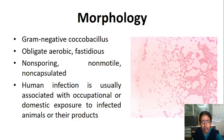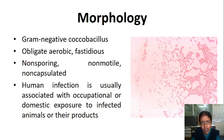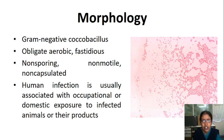Coming to morphology: Brucella are gram-negative coccobacilli, obligate aerobes that survive only in the presence of oxygen, but can sometimes tolerate 5 to 10% carbon dioxide. They are fastidious organisms — non-sporing, non-motile, and non-capsulated. Human infection is usually associated with occupational or domestic exposure to infected animals or their products, mostly sheep, goat, cattle, and pigs.